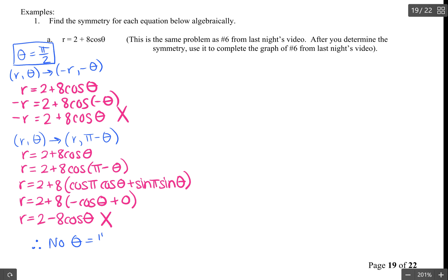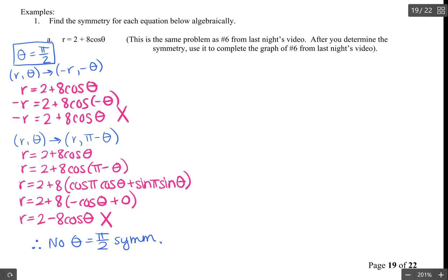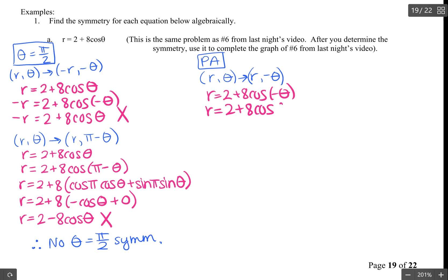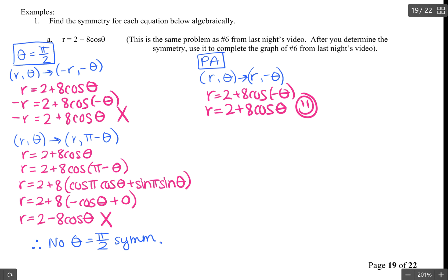Moving on to polar axis symmetry. The first test is r comma theta becomes r comma negative theta. Plugging in: r equals 2 plus 8 cosine of negative theta. We know cosine of negative theta is the same as cosine theta, so this equals the original equation r equals 2 plus 8 cosine theta. We do have polar axis symmetry.